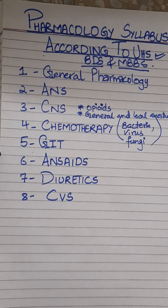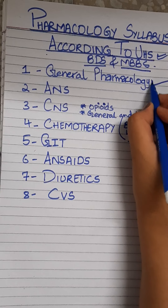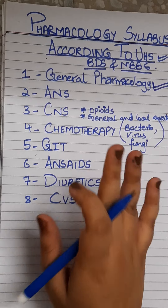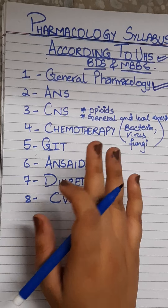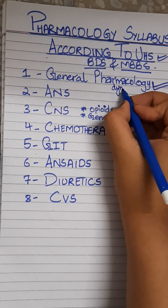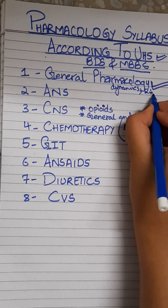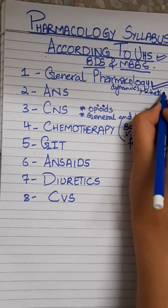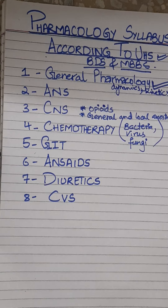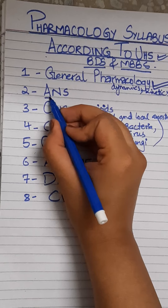First of all, the most important thing without which you cannot even think of starting pharmacology is general pharmacology. General pharmacology is very very important — it covers pharmacodynamics as well as kinetics, and many other things including graphs, which we will cover inshallah.